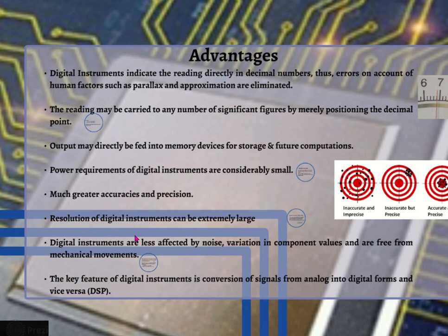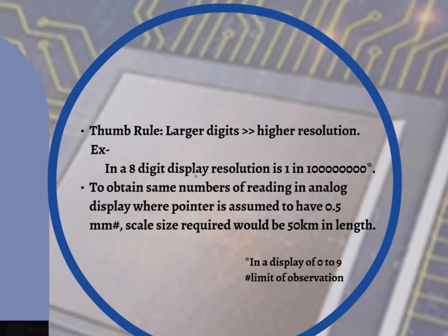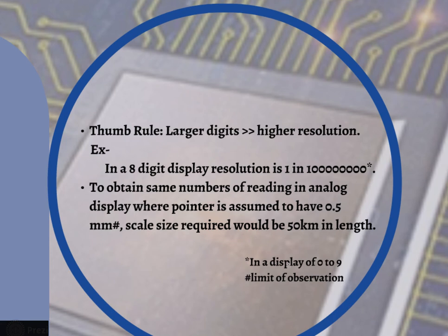The resolution of digital instruments can be extremely large. The thumb rule is: the larger the number of digits, the higher the resolution. For example, a digital display having 8 digits where each digit varies from 0 to 9 gives a resolution of 1 in 10 to the power of 8. If the display is capable of only displaying 0 and 1, then the resolution would be 1 in 2 to the power of 8.